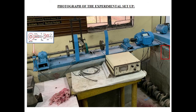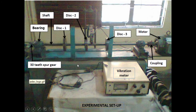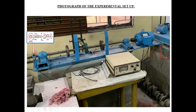This is the experimental setup — the photograph. Here, we have an annotated photograph also. This is the shaft — you can clearly identify it. On one end, we have a coupling and then we have a motor. This motor is a variable speed motor.